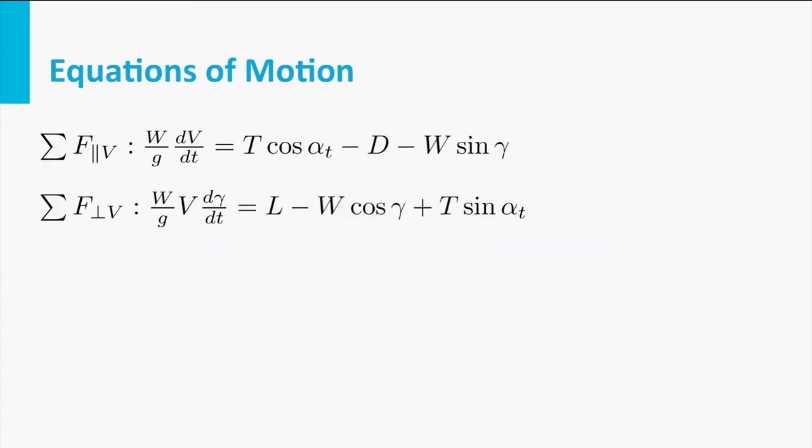Two variables in these equations, the airspeed and the flight path angle gamma, describe the state of the aircraft.